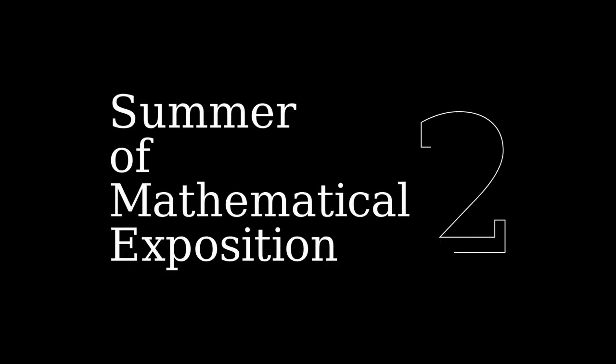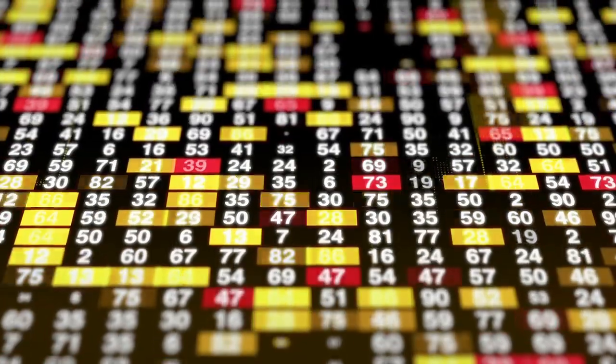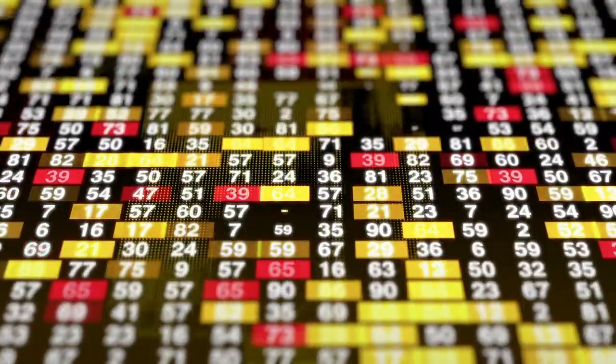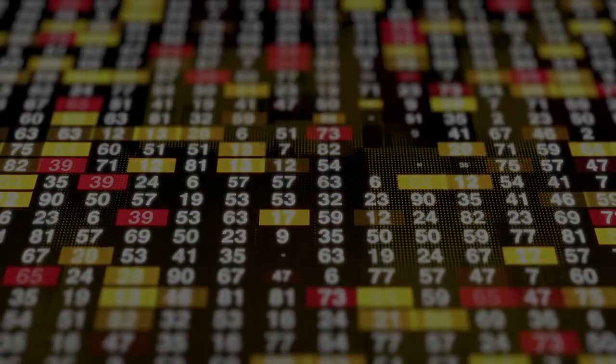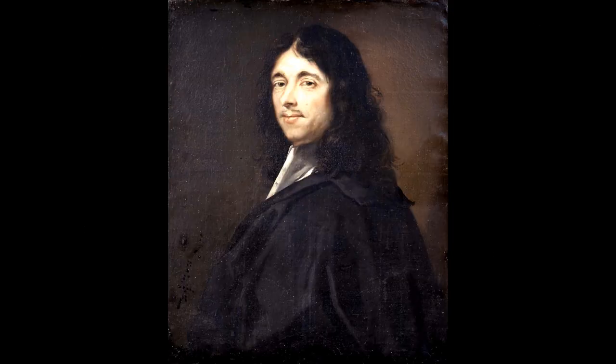Well, because the channel 3blue1brown is running a contest for math explainers, today we're going to take a look at a kind of number that is a lot like aliens in that we think there should be literally infinitely many of them, but we somehow haven't found any, and not for lack of trying. They have the whimsical name of Wall-Sun-Sun Primes, and they're connected to one of the most famous problems in the history of math. Let's explore.